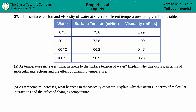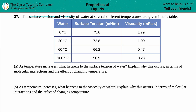Number 27. The surface tension and viscosity of water at several different temperatures are given in this table. We just have to answer two questions, A and B. For part A, we're only going to be talking about the temperature column and the surface tension column — nobody cares about viscosity at the moment.